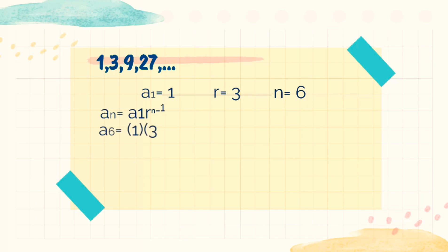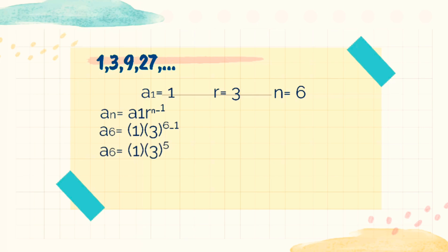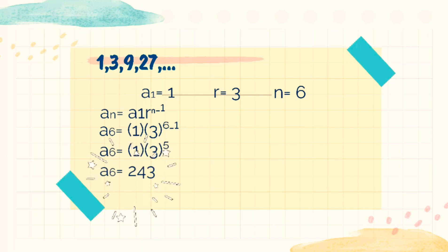So, we get a sub 6 equals 1 times 3 raised to 6 minus 1. And then, we get a sub 6 equals 1 times 3 raised to 5. And by calculating, we get the final answer — the 6th term, which is 243.